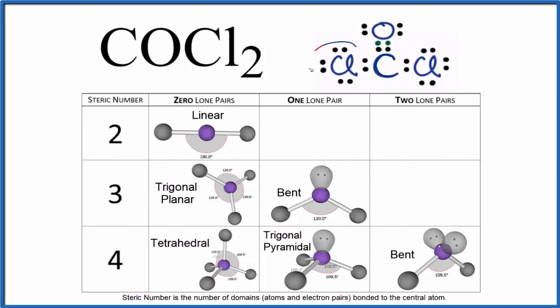The central carbon has one, two, three atoms bonded and no lone pairs. So the steric number is three, no lone pairs.